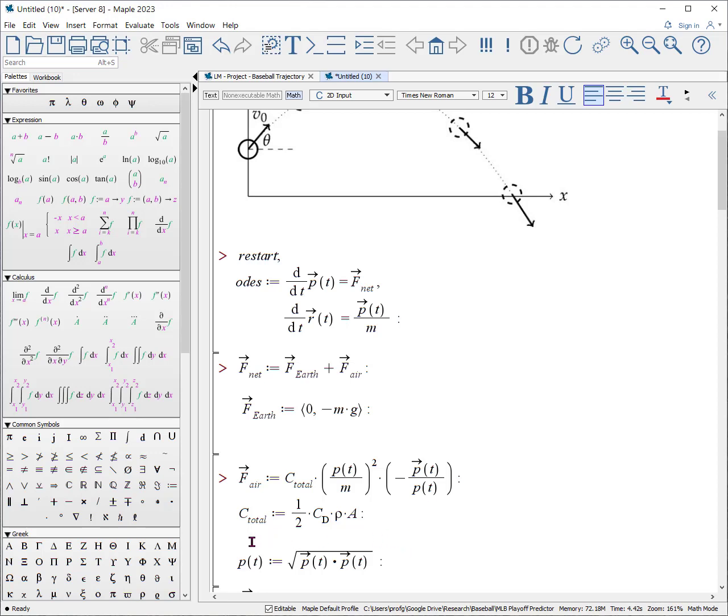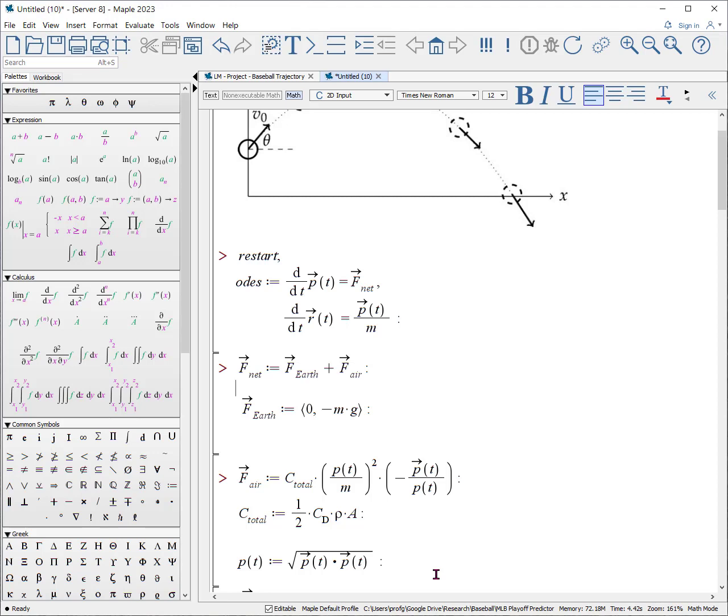Doing some engineering, we find out that the total coefficient in front is due to one-half the drag coefficient times the density of the air times the cross-sectional area. These are values we can look up, and how do we calculate the magnitude? It's the square root of the dot product of the vector itself with itself, and the nice thing about this technique is that you can do it in two or three dimensions.